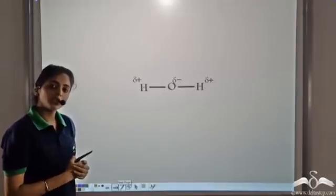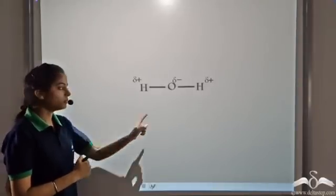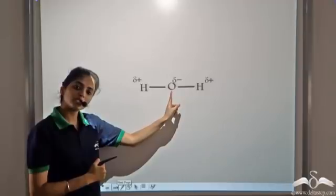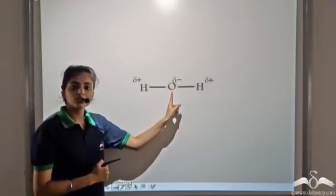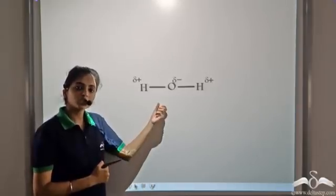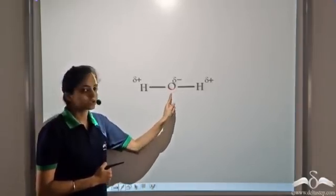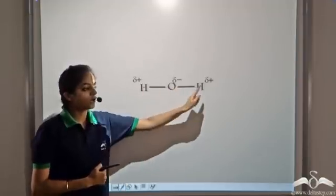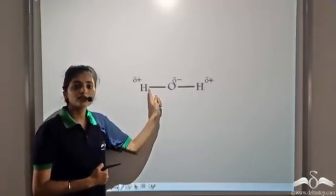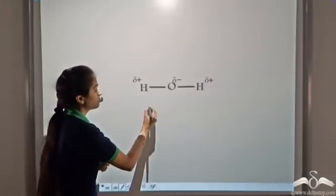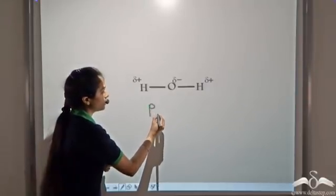Similarly, water is formed by two hydrogen atoms and one oxygen atom. Oxygen is more electronegative than hydrogen, so it tends to attract the shared pair of electrons. So oxygen gets a slight negative charge and the two hydrogen atoms get a slight positive charge. So water is a polar covalent compound.